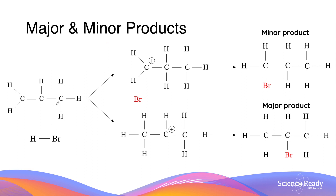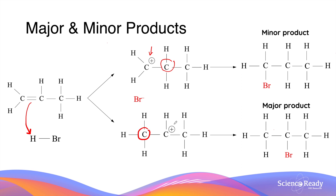Let's take a look at another hydrohalogenation reaction with propene. Electrons in the double bond are attracted to the partially positive hydrogen atom in the hydrogen halide molecule, forming a bond. However, this time there is actually a different intermediate molecule formed depending on which carbon atom the hydrogen atom is added to. If the hydrogen atom is added to the second or middle carbon atom, the first carbon atom becomes positively charged because it only has three covalent bonds. If the hydrogen atom is added to the first carbon atom, then the second carbon atom becomes positively charged, again because it only has three covalent bonds.